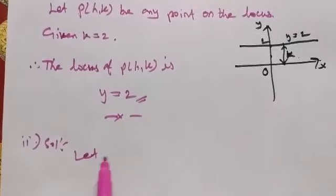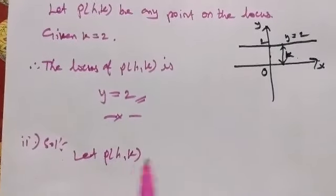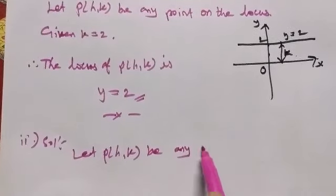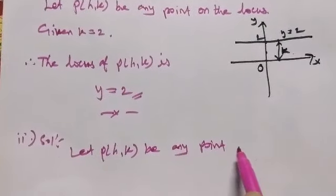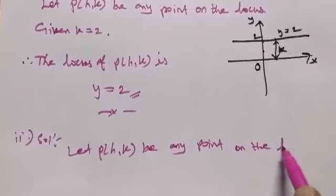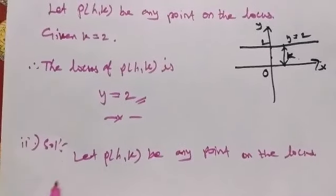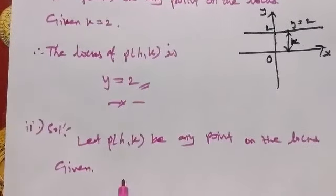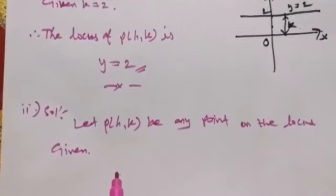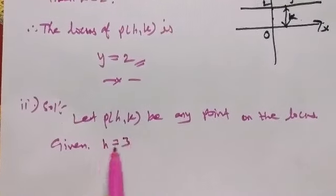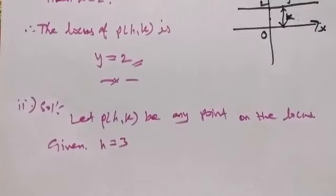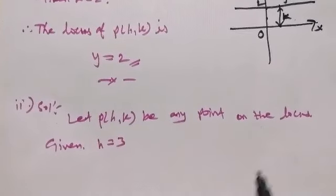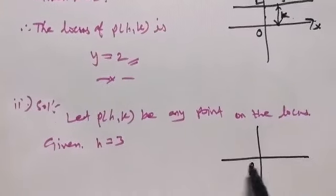For the second one, let P(h,k) be any point on the locus. Given 3 units from the Y axis, so h is equal to 3.